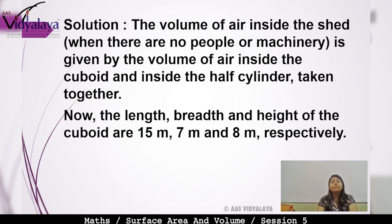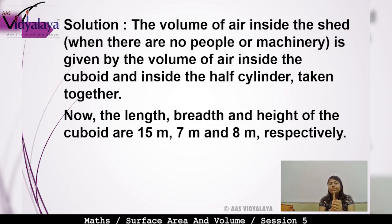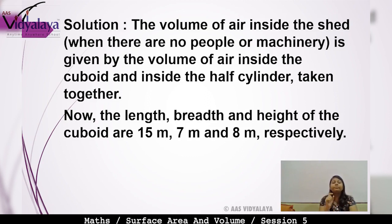The volume of air inside the shed, where there are no people or machinery, is given by the volume of air inside the cuboid plus the volume inside the half cylinder taken together. Since the cuboid and half cylinder are two objects combined to form one object, the volume of the new solid is the sum of the individual volumes.